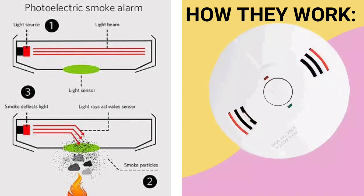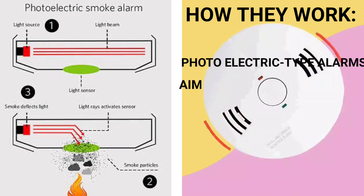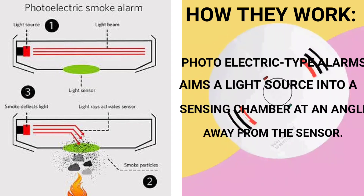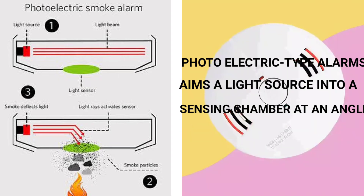Photoelectric-type alarms aim a light source in a sensing chamber at an angle away from the sensor. When smoke enters the chamber, it reflects light into the light sensor, triggering the alarm.